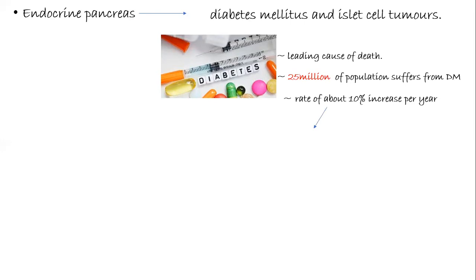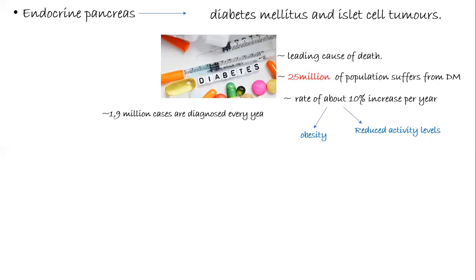The rise in the rate of diabetic patients is basically due to two things: obesity and reduced activity levels. These are the two major contributing factors. Almost 1.9 million cases are diagnosed every year. India and China are major contributors to the world's diabetic load.